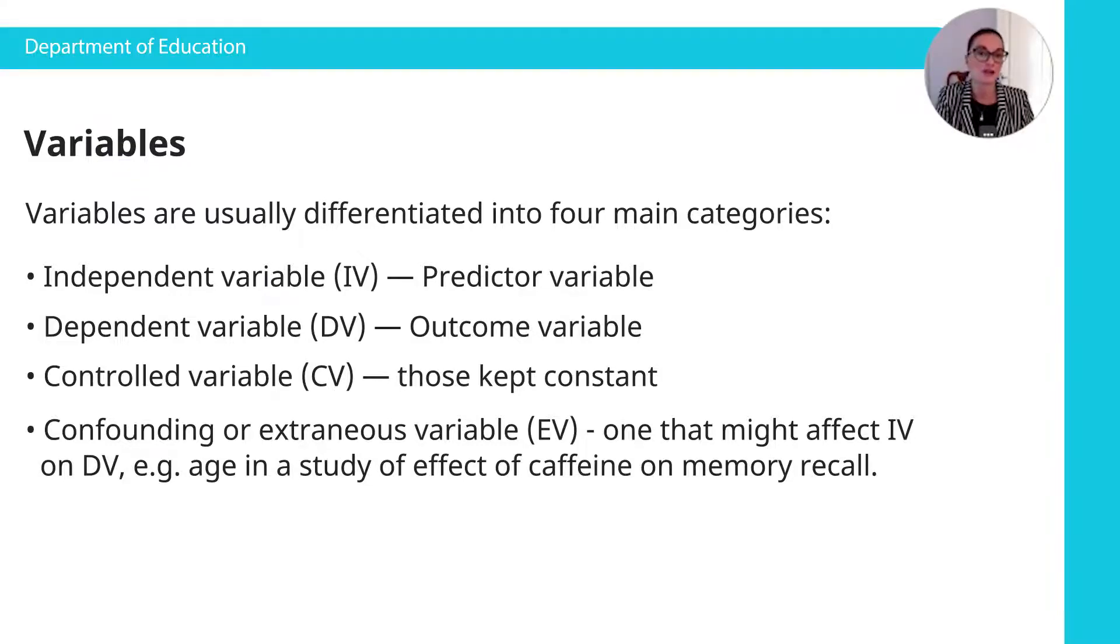For example, if you're doing a study on memory recall, and you want to look at how well people recall things from memory, looking at the age of your participants will be quite important because as you get older, some people may suffer from dementia and have memory issues. So that could be a confounding variable in your study, and that's important to take into consideration.